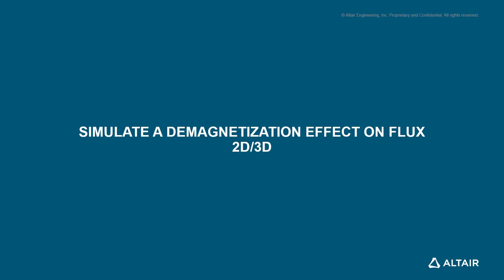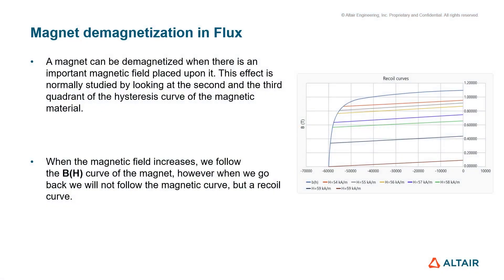The second point is simulating the demagnetization effect in Flux 2D and 3D. A reminder about the working conditions which can cause demagnetization of the magnets: namely temperature and the magnetic field. From this curve, we can see the variation of the remanence flux density according to the value of the magnetic field. While the magnetic field increases, we follow the BH curve of the magnet. However, when we go back, we will not follow the same magnetic curve but a recoil curve. This means that the magnets are partially demagnetized.